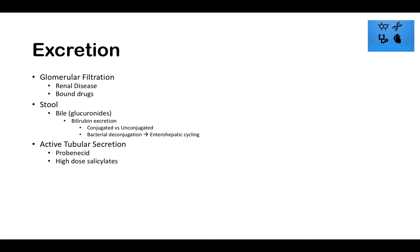High-dose aspirin can also block active tubular secretion transporters. Passive tubular reabsorption — absorbing from the tubule back into the bloodstream — can also occur. If we want to excrete a drug rapidly, such as in an overdose, we can use ion trapping.